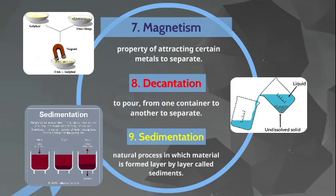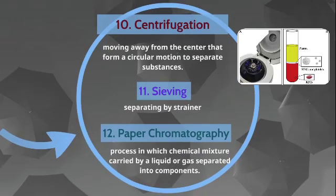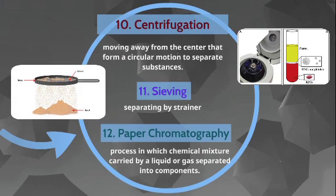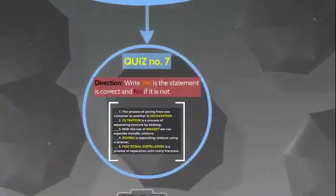Number nine: sedimentation — a natural process in which material is formed layer by layer, called sediments. Number ten: centrifugation — moving away from the center in a circular motion to separate substances. Number eleven: sieving — separating by a strainer. Number twelve: paper chromatography — a process in which a chemical mixture carried by a liquid is separated into components.